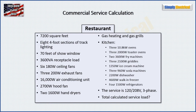Here is our example: a restaurant, 7,200 square foot building. We have eight four-foot sections of track lighting, 70 feet of show window, receptacles, ceiling fans, exhaust fans, an AC unit, a hood fan, some hand dryers, and the heating and grills are gas — which is important. Then we have our kitchen equipment all listed out, and lastly our service is 120/208-volt, three-phase. We want to find out what our total calculated service load is.